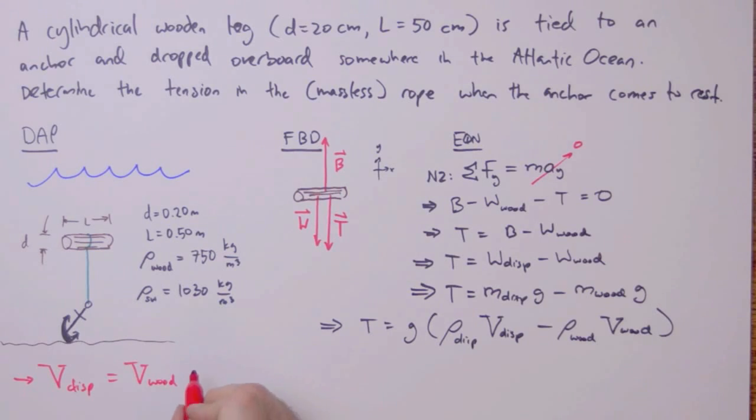And I'm just going to set that equal to V, which in this instance is going to be the volume of a cylinder, pi r squared times L. So we get T is equal to G times, I'm going to factor that out since it's the same thing, pi r squared times L.